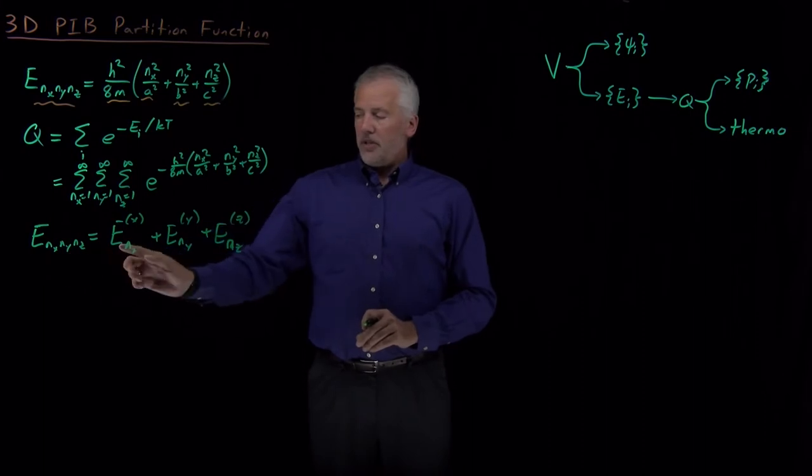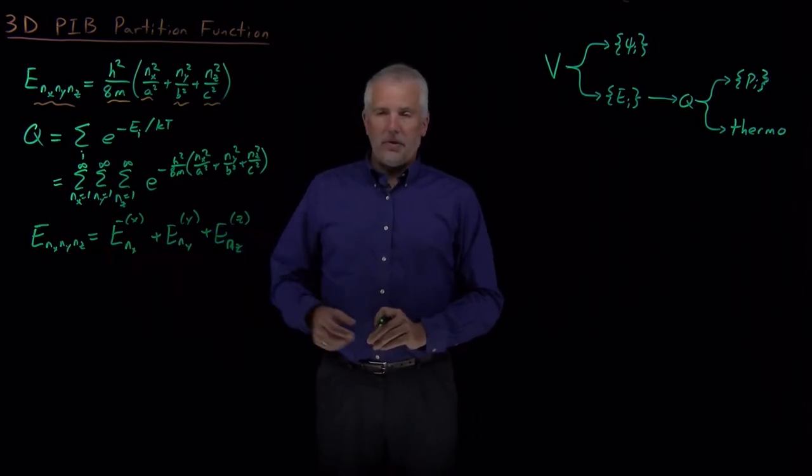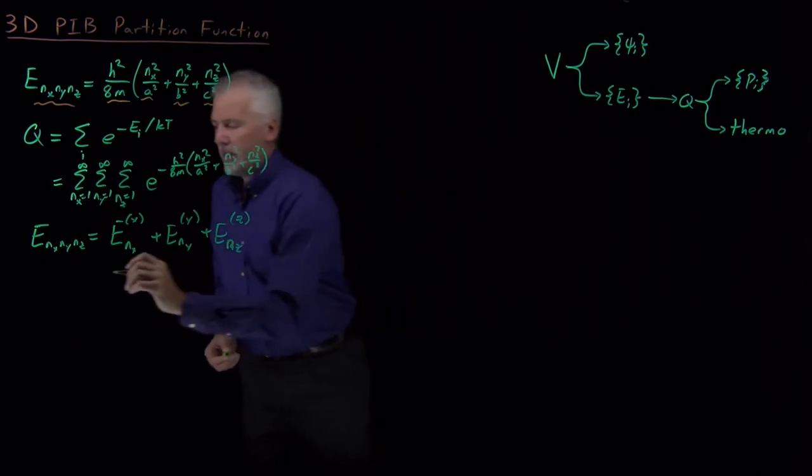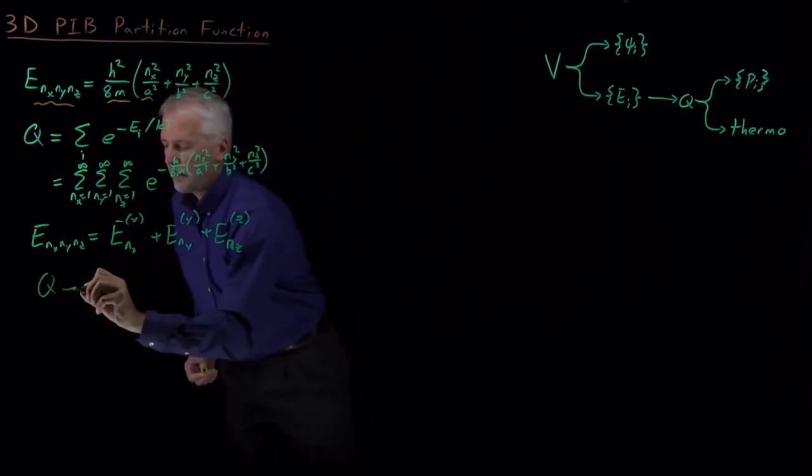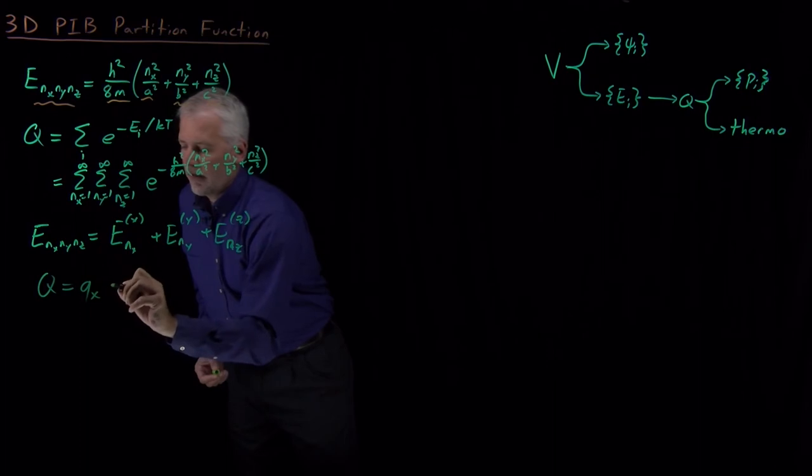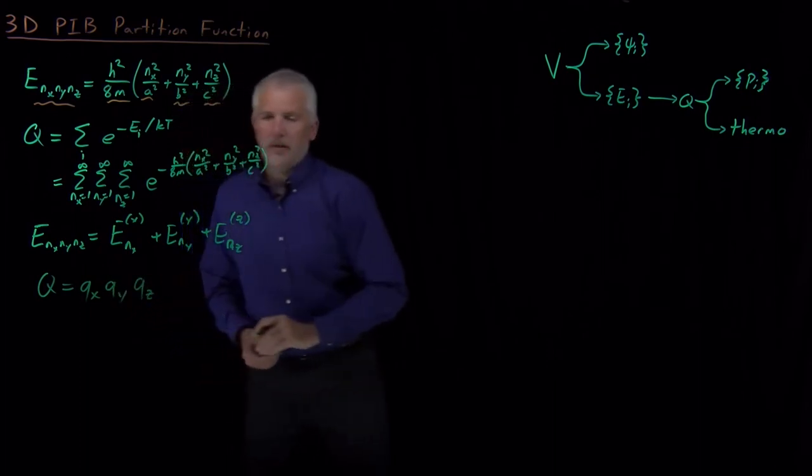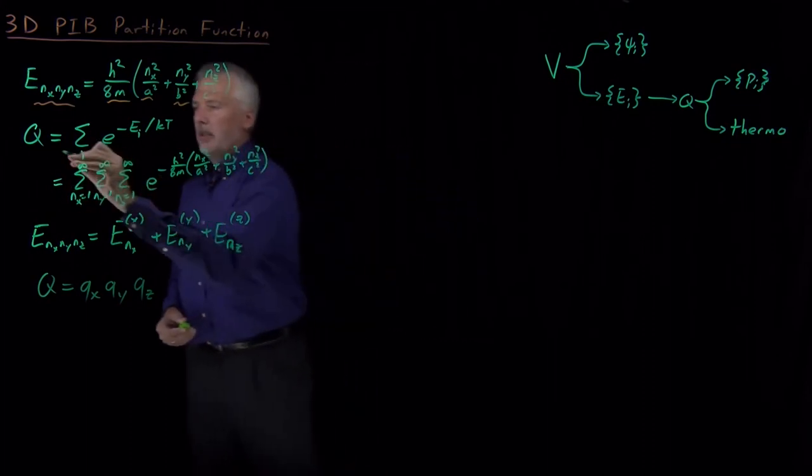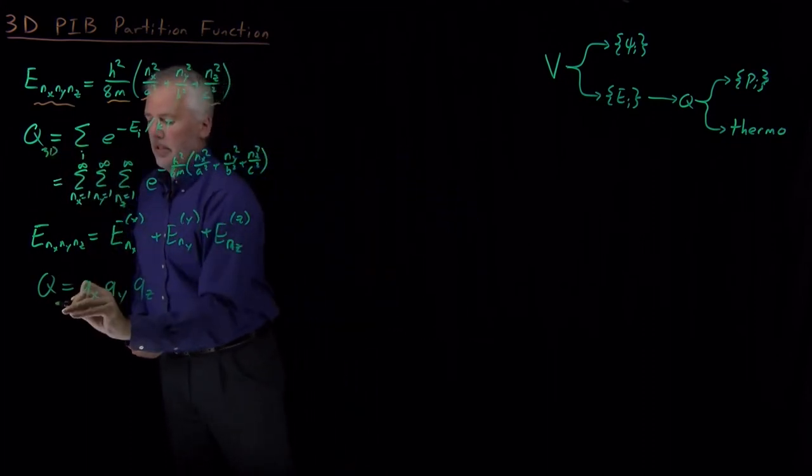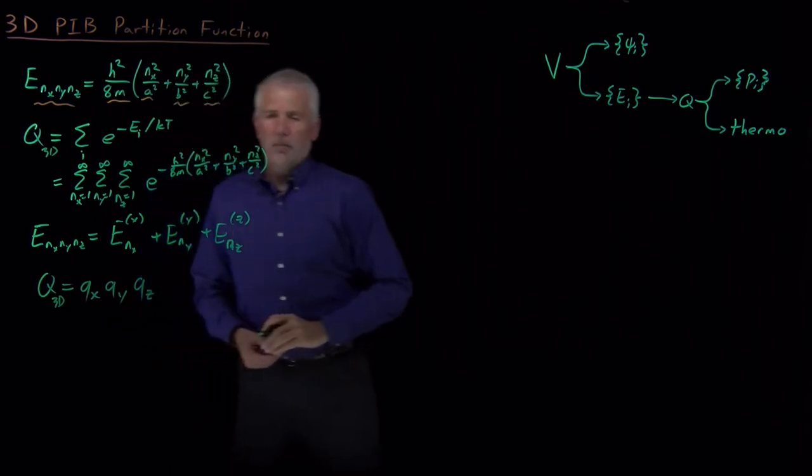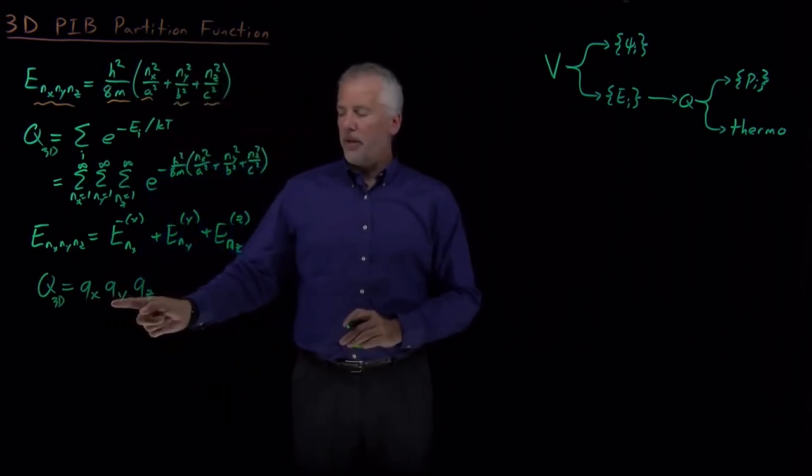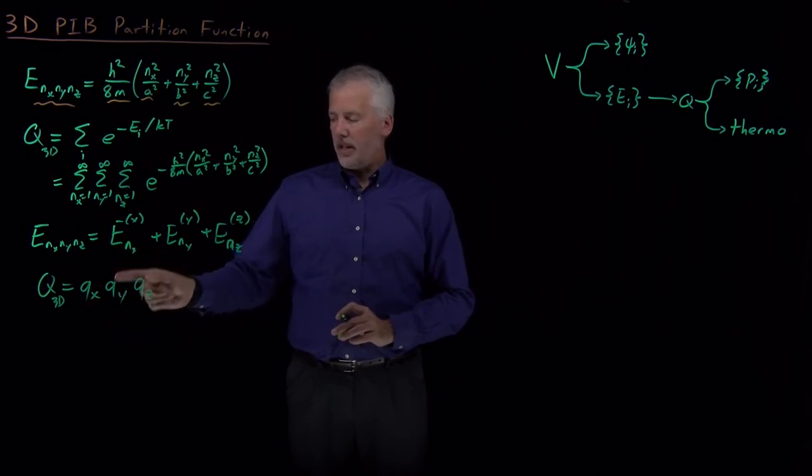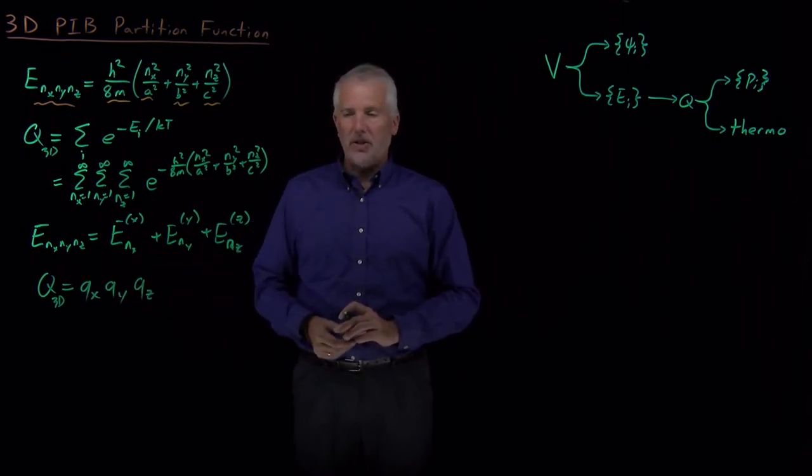We know that if the energy is the sum of the energies of several different subsystem energies, or subcomponent energies, then the partition function is going to be the product of the partition functions for those three different subsystems. So this 3D particle in a box partition function is the product of three different one-dimensional particle in a box partition functions, the one we obtain from the x energies, the y energies, the z energies.